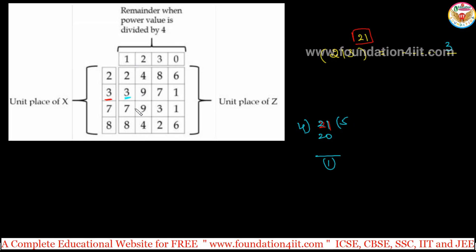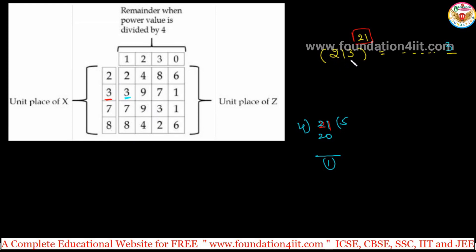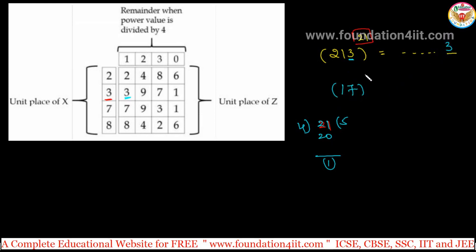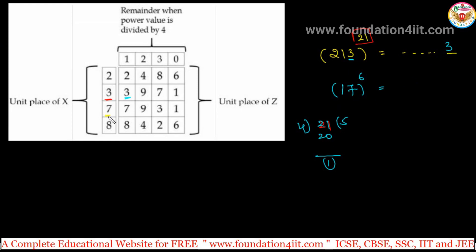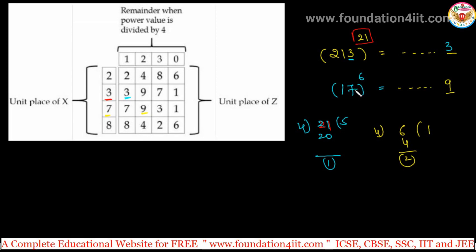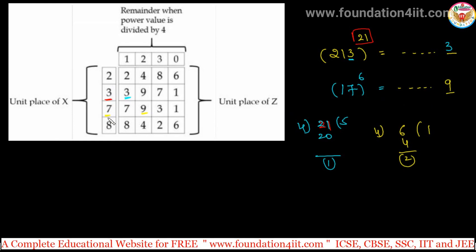The cycles are: 2→4→8→6; 3→9→7→1; 7→9→3→1. If unit digit is 3 and remainder is 1, the unit digit of the result is 3. Next example: 17 to the power 6. Take unit digit 7, divide the power 6 by 4: remainder is 2. Remainder 2 for 7 gives unit digit 9. So 17 to the power 6 has unit digit 9 in the units place.